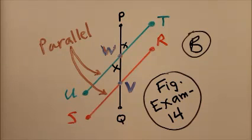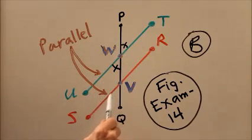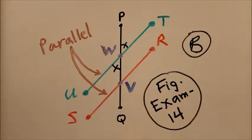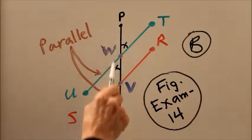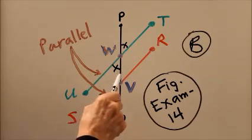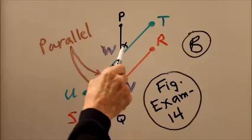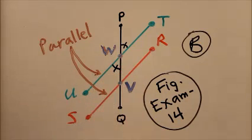How about choice E. PVS and WVR. PVS is this obtuse angle here, and WVR is the adjacent acute angle. So no, that's not right. B is our answer.